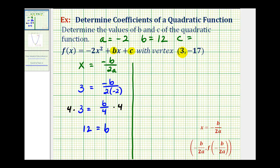Now going back to our vertex, notice when x is three, y is equal to negative seventeen, which means if we evaluate our function or determine f of three, it must equal negative seventeen. So f of three is going to be equal to negative two times three squared. We know b is twelve, so we'd have plus twelve times three, plus c, and we know this must equal negative seventeen.